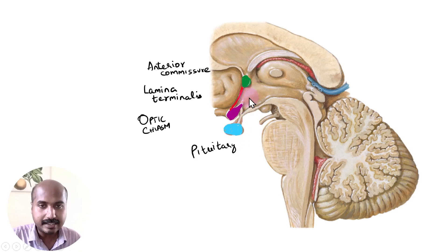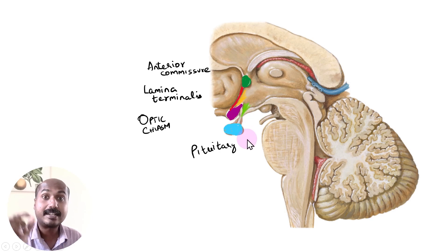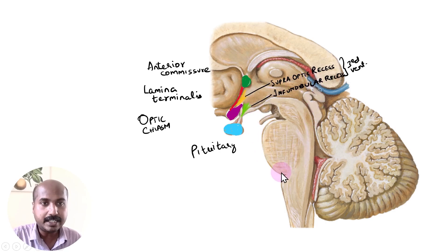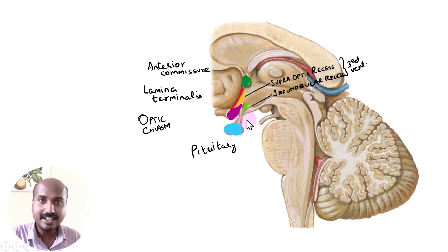Now let us look at the two shaded regions in the third ventricle. The first is a pocket creating an acute angle formed between the lamina terminalis and the optic chiasma. The second, shaded light green, extends slightly into the pituitary stalk. These two are recesses of the third ventricle with specific names: the first is called the supraoptic recess — because it is just above the optic chiasma — and the second is the infundibular recess, because it extends into the infundibulum or pituitary stalk.